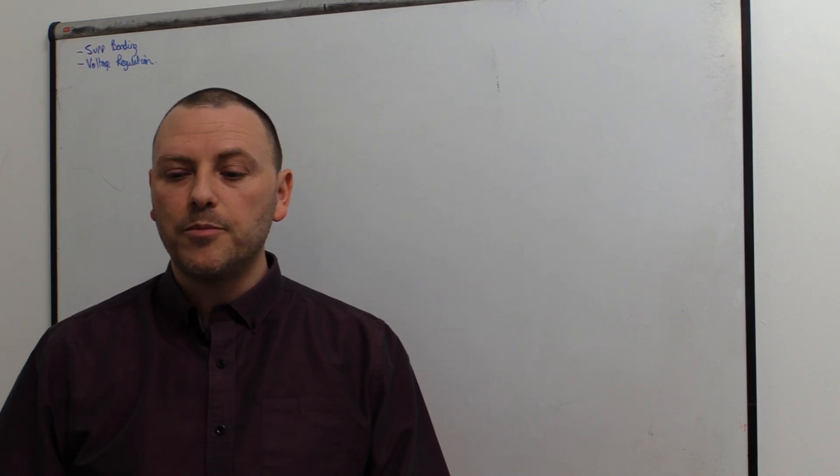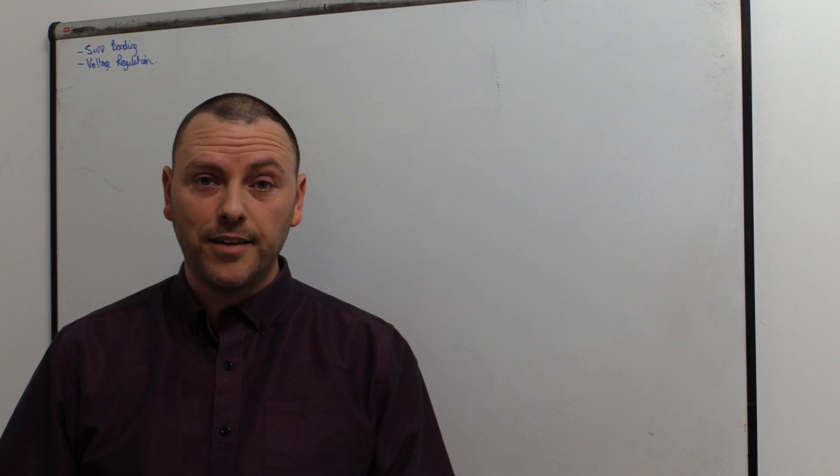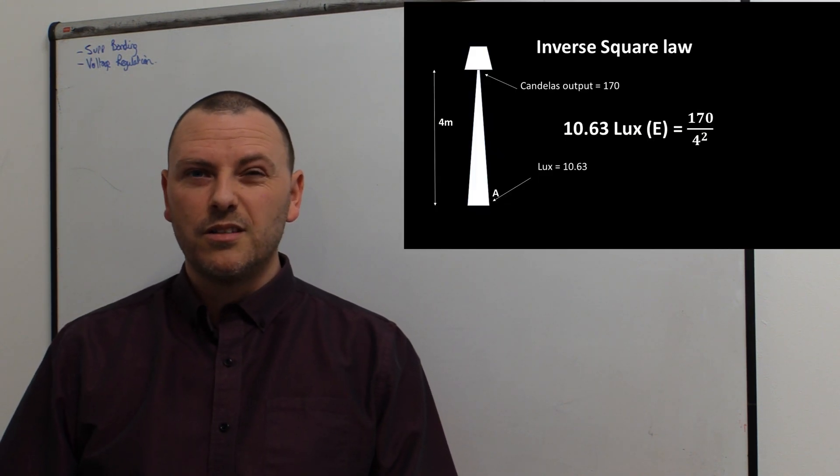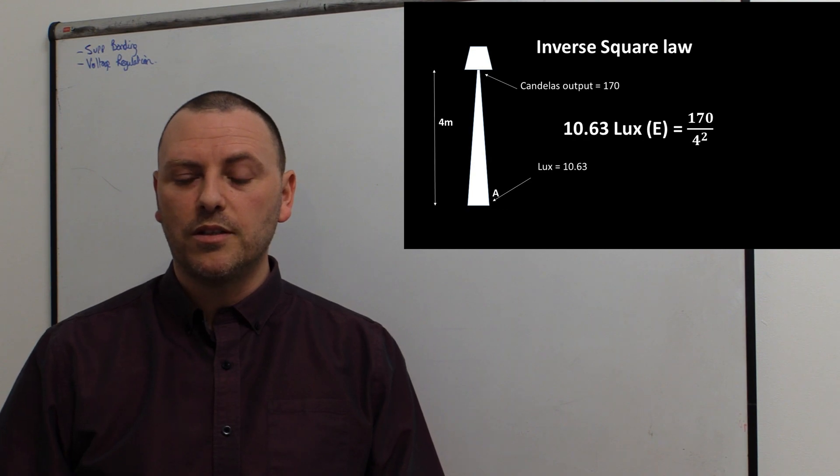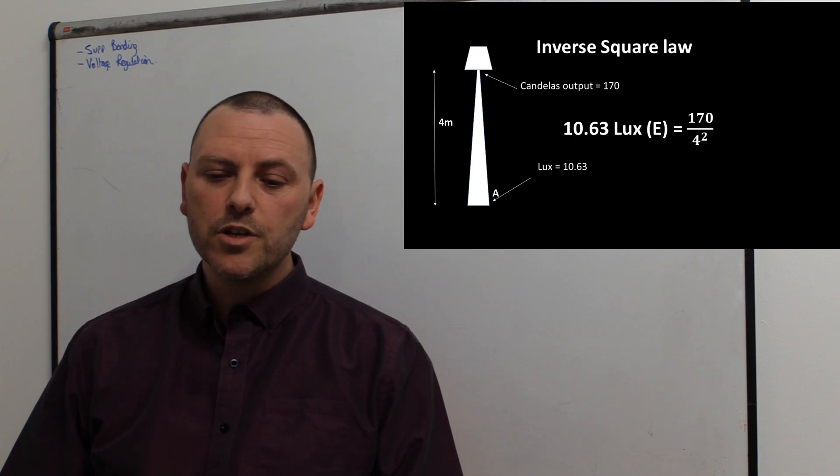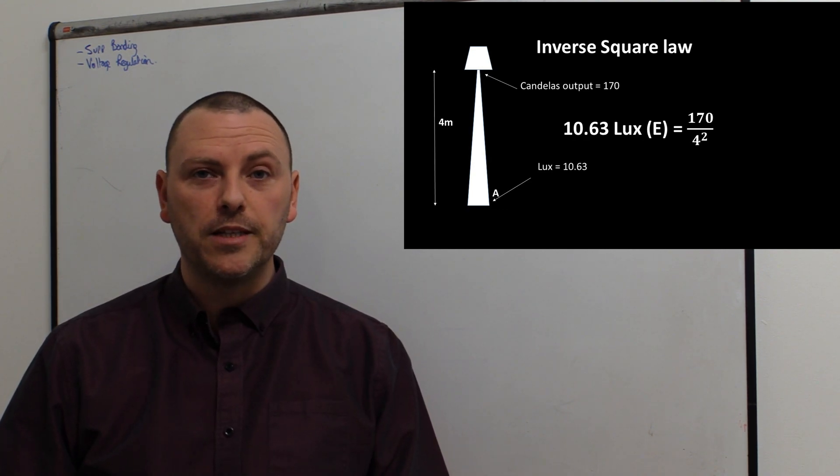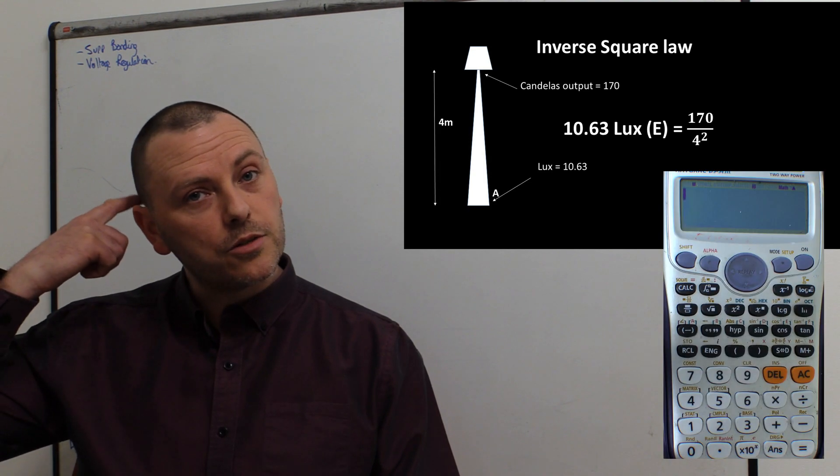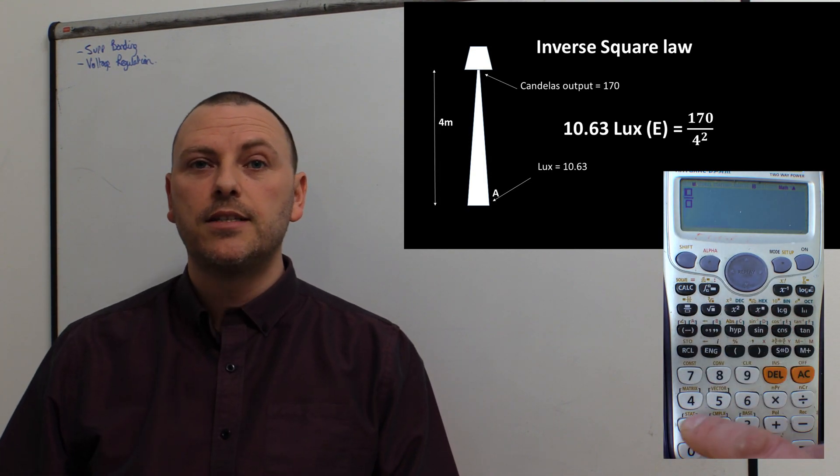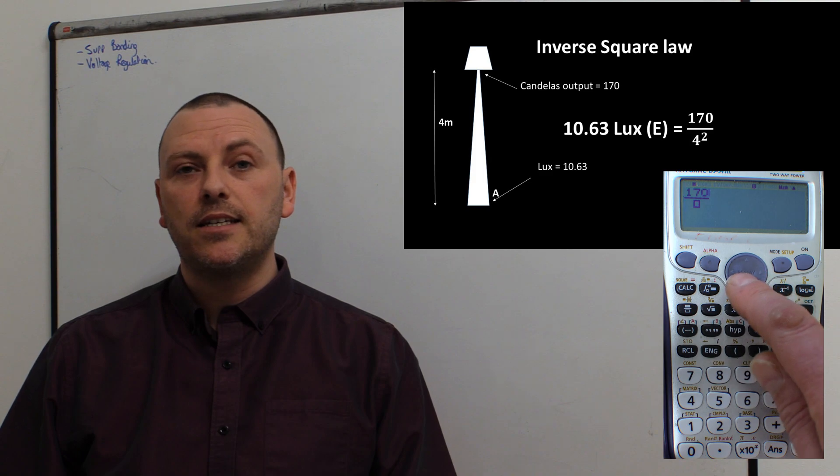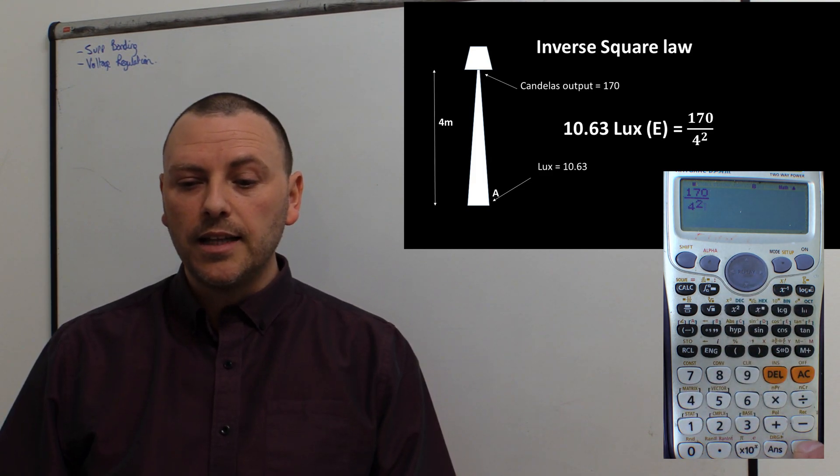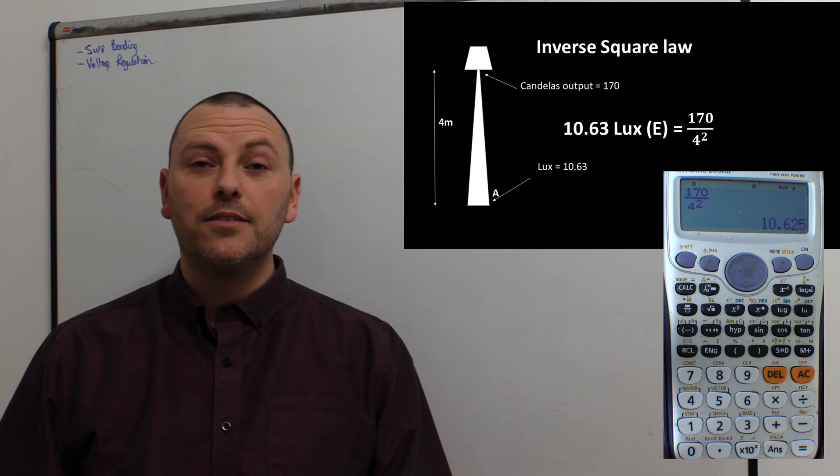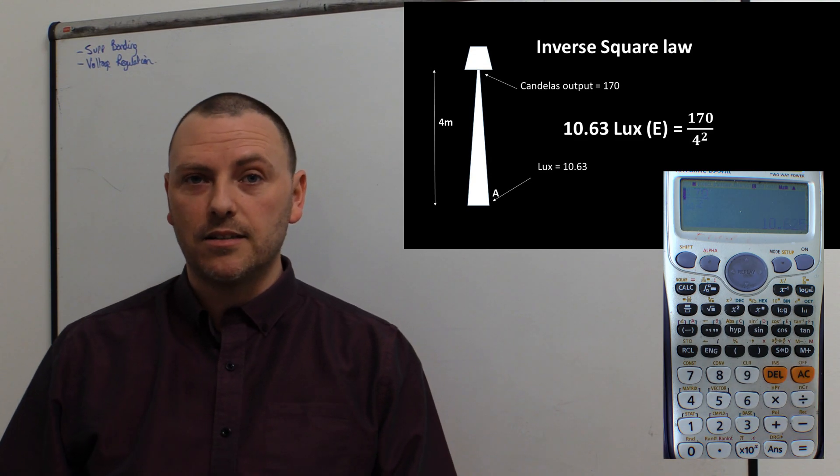Now let's double that distance and see how that affects the lux levels because it should be about a quarter given what I said earlier. So this time we're four meters away from the light source to the point of interest. So 170 divided by four meters squared and that gives us a lux level of 10.63 lux.